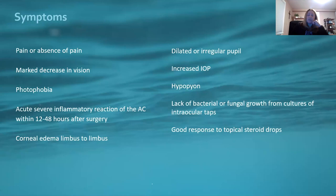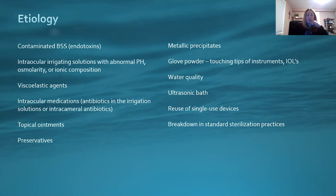How do we get TASS — where does it come from? There are so very many ways. Contamination of your instruments, flushing, making sure you're getting all debris off your instruments. There's also contaminated BSS, endotoxins that can be in the BSS, and intraocular irrigating solutions that may have an abnormal pH, osmolarity, or ionic composition.